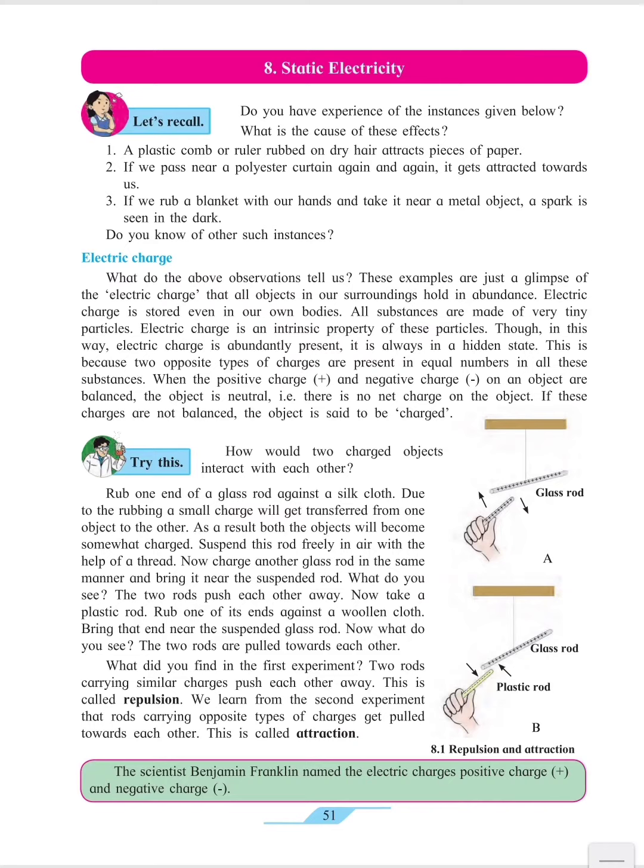In the previous class we have studied what is electric charge. We came to know the positive and negative charge. When could we say that the object is balanced and the object is charged? We have discussed these all points in the previous class. We have also discussed about electrically neutral substances.